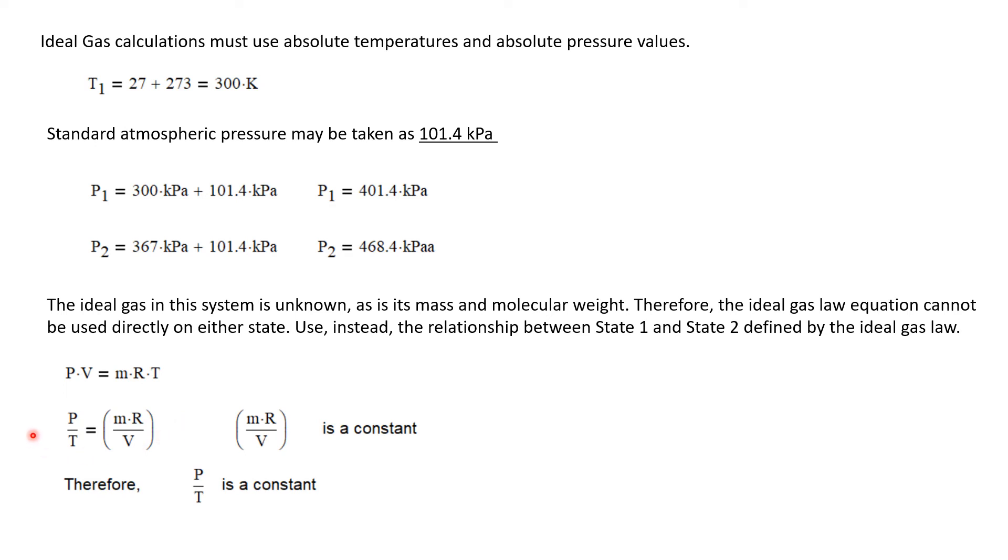Let's do that this way. Let's rewrite the gas law as P over T equals MR over V. Notice that MR over V is a constant. It's a closed system, so the mass is constant. The gas constant is, by definition, a constant. And this is a constant volume process. The volume of the rigid tank does not change. So I can conclude that P over T is a constant.